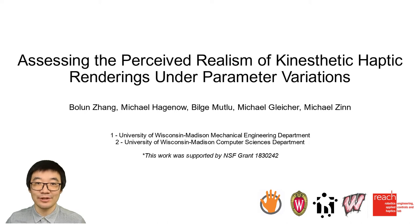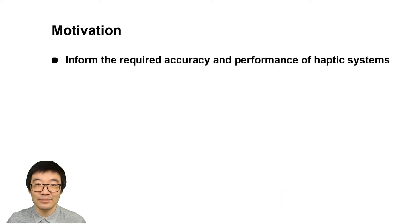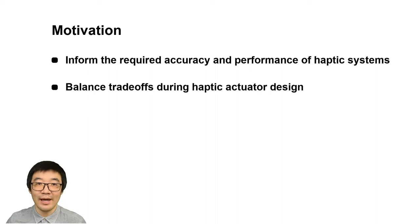As researchers continue to advance methods and systems to produce more accurate haptic renderings, it is also important to consider whether the improved accuracy benefits the perceived realism of rendering. Studying perceived realism can inform the required accuracy and performance of haptic systems. Furthermore, understanding the sensitivities of users to imperfections in model parameters can help system designers balance trade-offs during haptic actuator design.